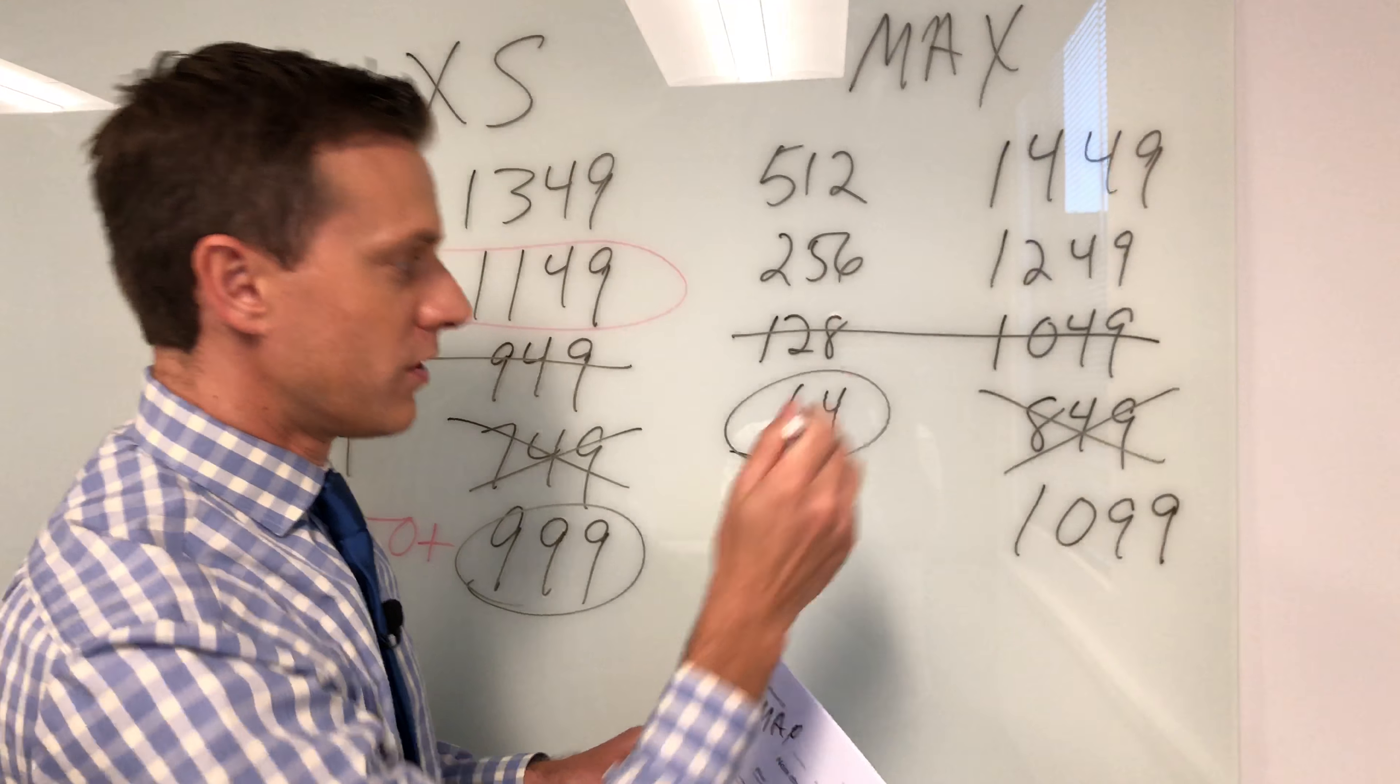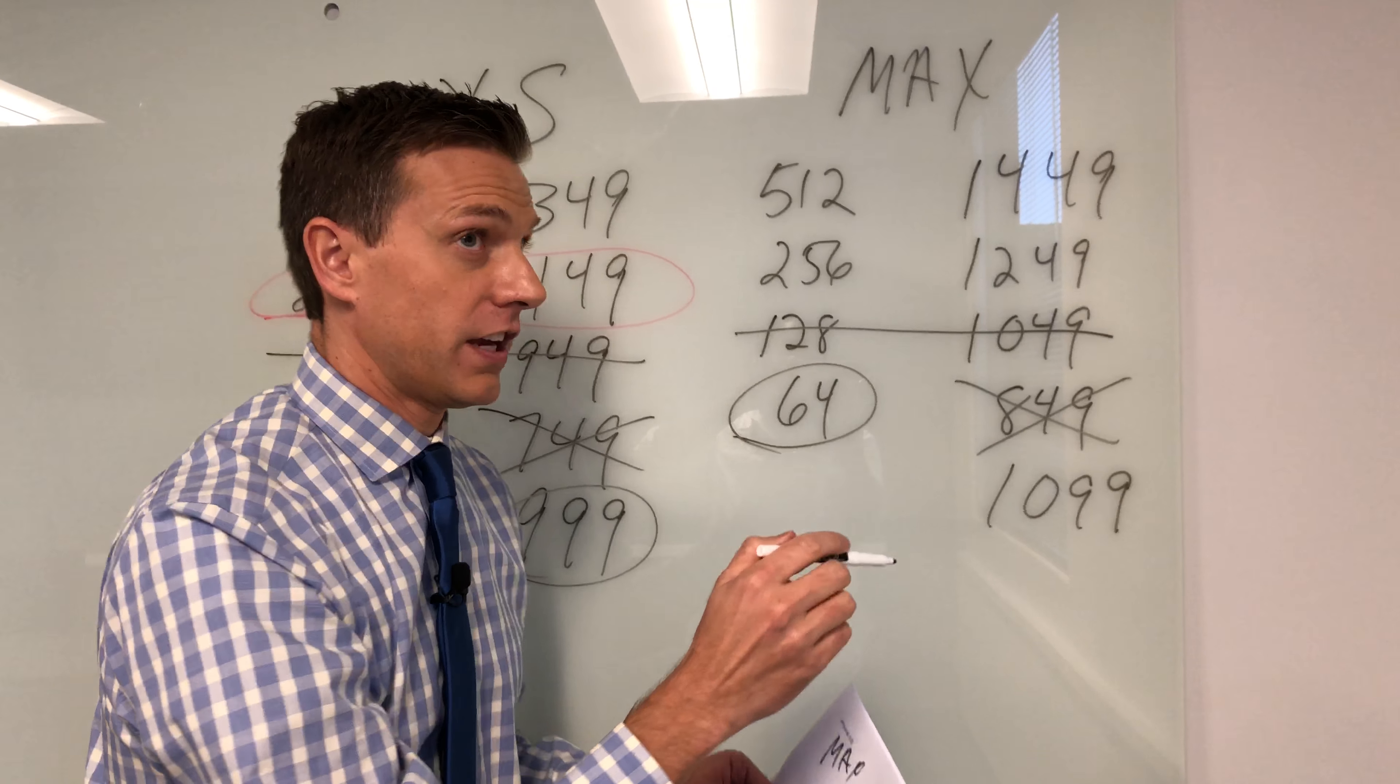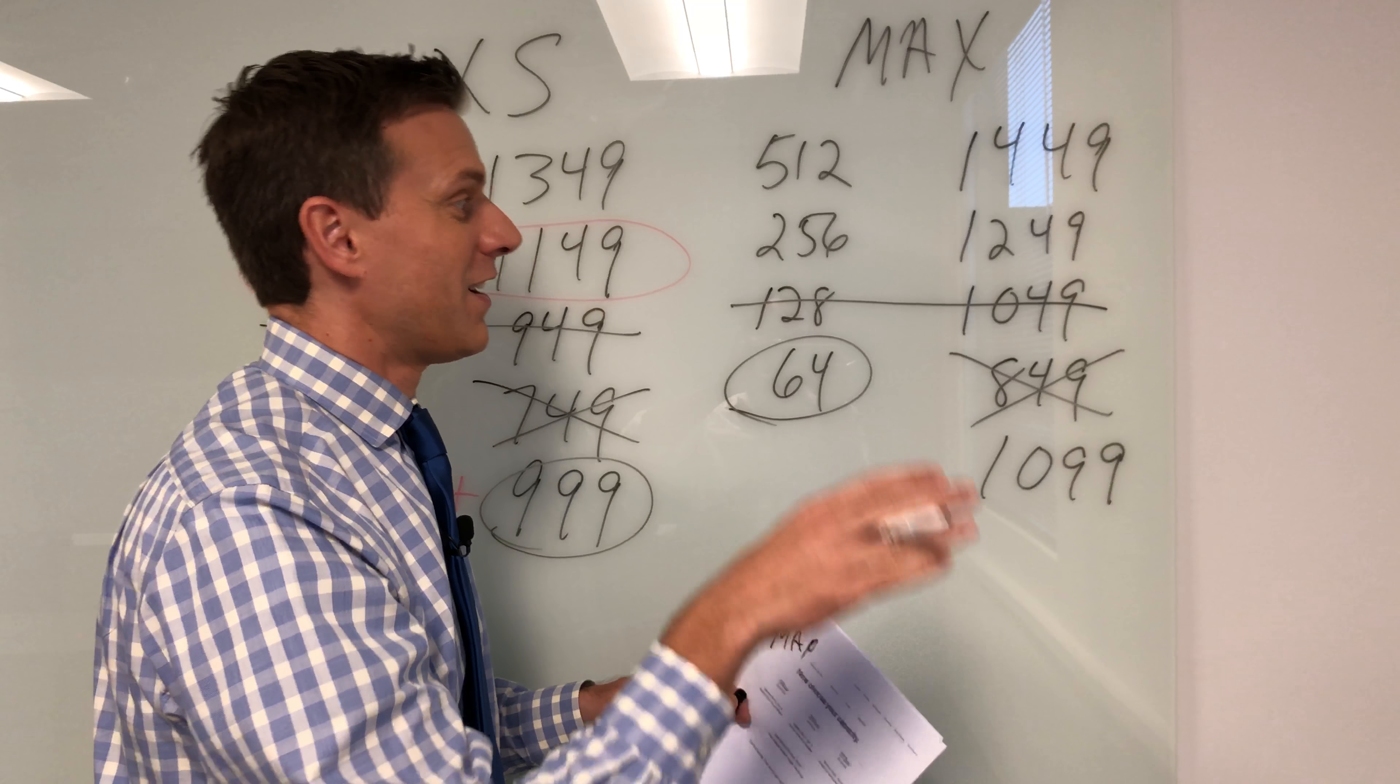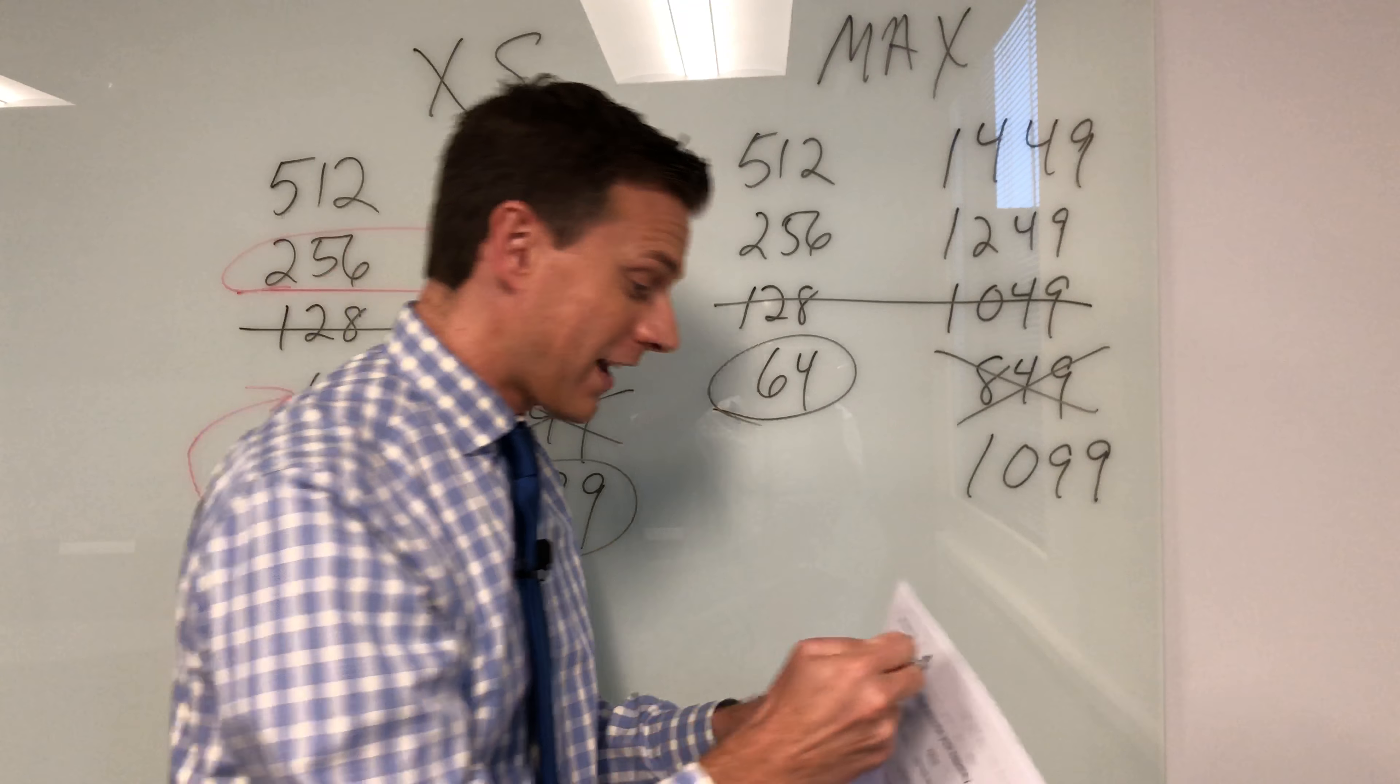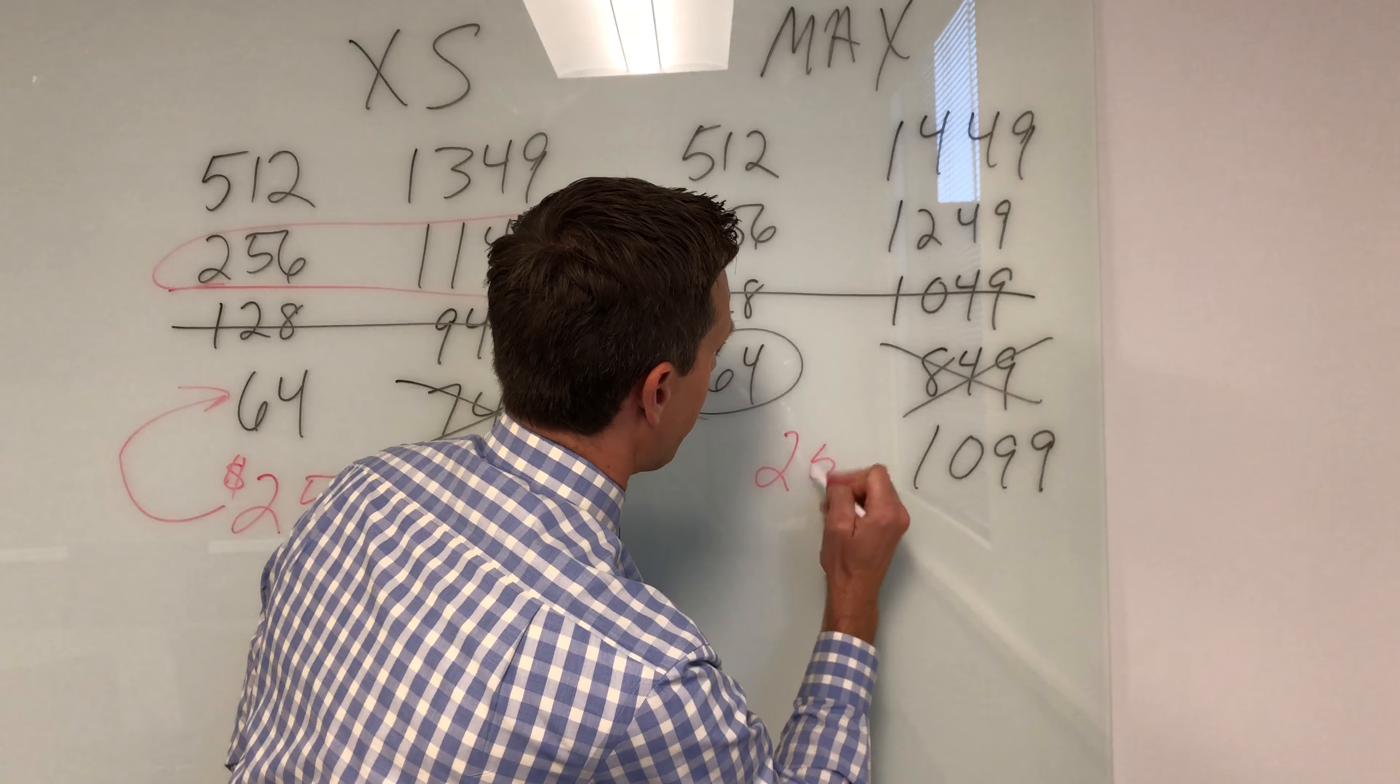So if we do the math again, you're looking at $1,100 minus $850, which is, let me do my math, hold on, $1,100, so that'd be $100, $100, $200, oh, again, that magic number of $250.